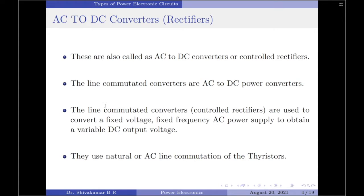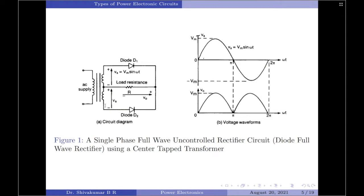In an uncontrolled rectifier, the switches used are uncontrollable in the sense that they conduct for the complete half cycle of the input cycle, and hence the output is quite fixed. Most often, uncontrolled rectifiers use diodes as switching elements, as they turn on and off at the very beginning of the input cycle. The figure here shows an example circuit for an uncontrolled rectifier in an ideal condition. As you can see, we have a full-wave uncontrolled rectifier. At the beginning of the positive half cycle, diode D1 conducts and the complete positive half cycle appears across the output. Similarly, when the negative half cycle starts, diode D2 conducts and the complete negative half cycle appears inversely across the output. Because it is an AC to DC converter, there is absolutely no control over the output voltage waveform, and this is why we call a diode rectifier an uncontrolled rectifier.